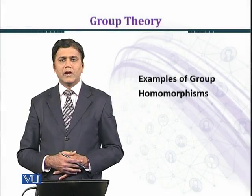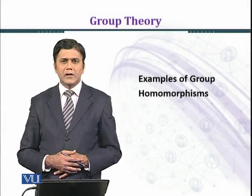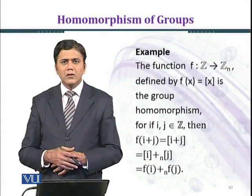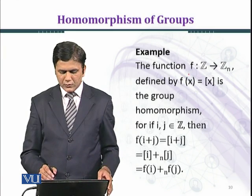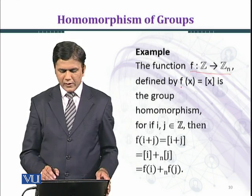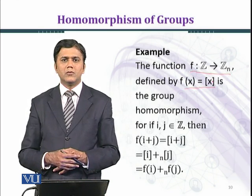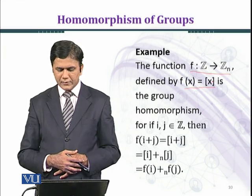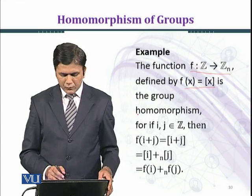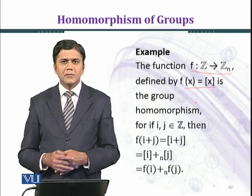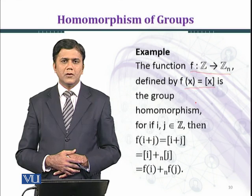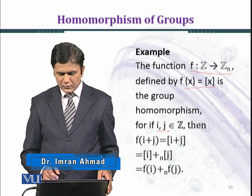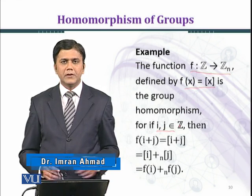In this module we shall discuss some examples of group homomorphisms. The function f from ℤ to ℤ_n defined by f(x) equal to [x], the class x modulo n, and we need to see whether it is a homomorphism or not. To see this we are choosing two elements from the set of integers, i and j, two arbitrary elements.